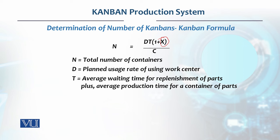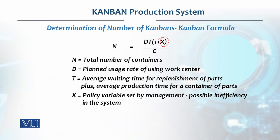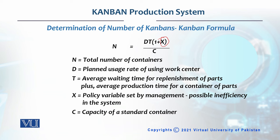This t is what we call lead time in normal inventory management. x is a policy variable set by management — it represents inefficiency in the system, meaning how much safety stock to keep. For example, 10% safety stock means x = 0.1, and 20% means x = 0.2. c is the capacity of the container — how many units fit in the container — and based on that we determine how many Kanbans are needed.